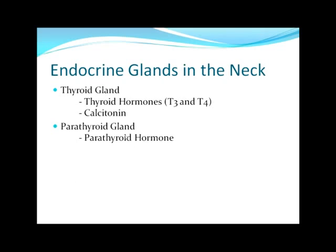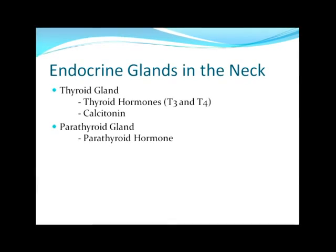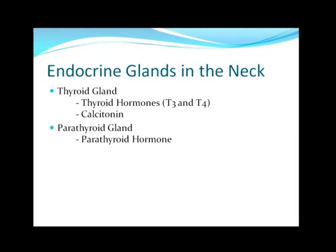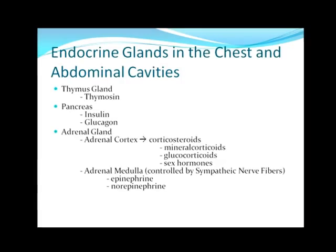Calcitonin is stimulated when blood calcium levels are greater than the homeostatic level; it activates osteoblasts to lay down new bone matrix within the skeleton. Parathyroid hormone, made by the parathyroid gland, is basically the antagonist of calcitonin. It is stimulated when calcium levels are below the homeostatic level, and it stimulates osteoclasts to break down bony matrix and deposit calcium into the bloodstream.